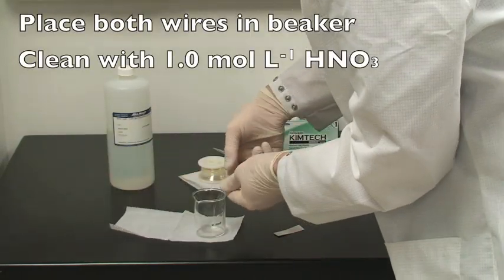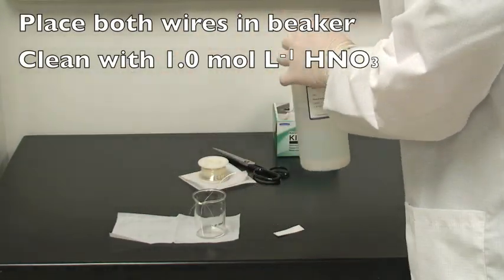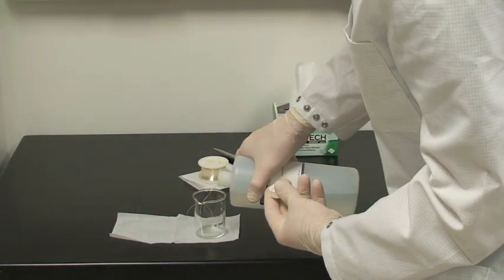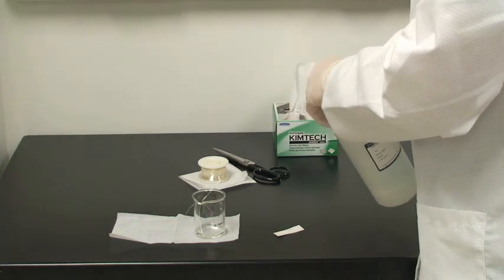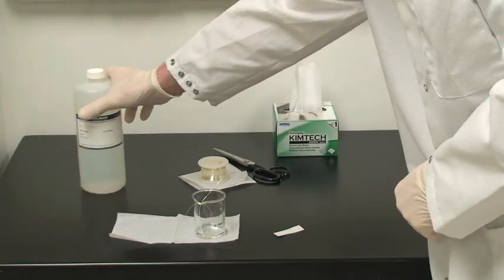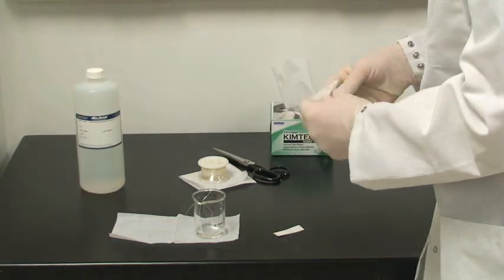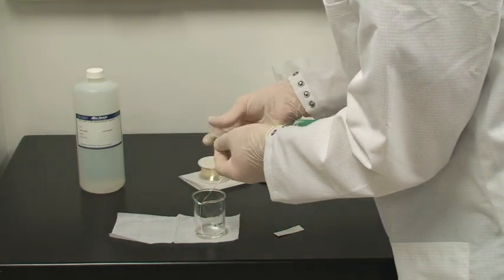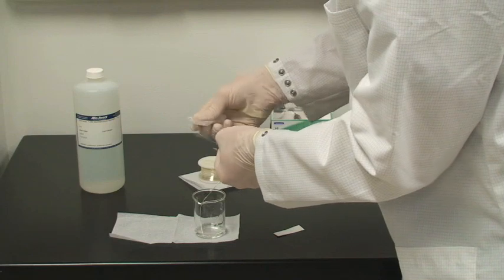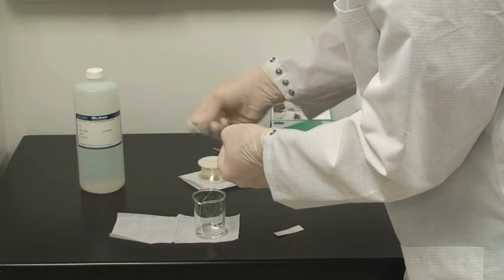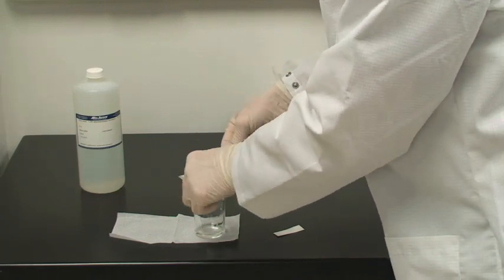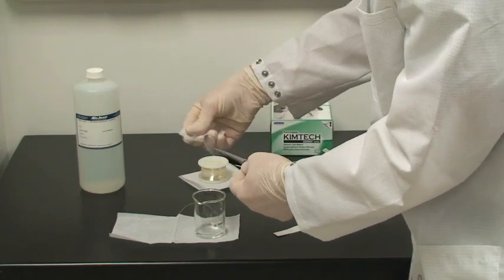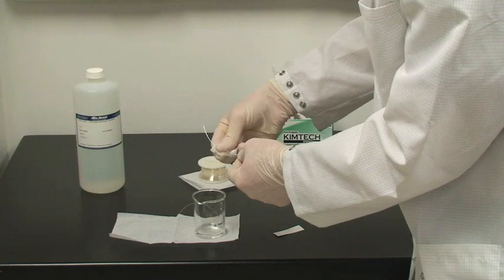Place both wires, sanded end down, into a clean beaker and add a small amount of nitric acid. If possible, please re-use the nitric acid in the marked storage container. Then use the nitric acid to clean the sanded edges of the wire to further improve the purity of the silver.